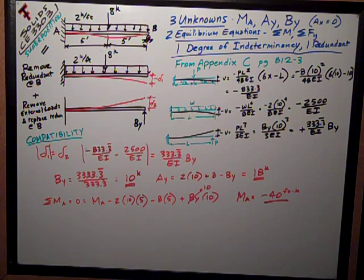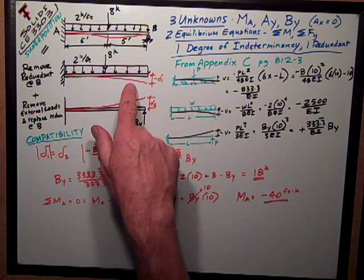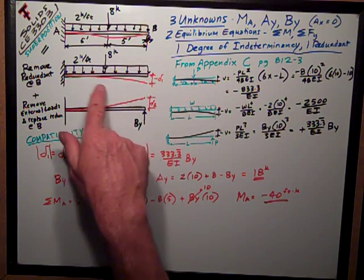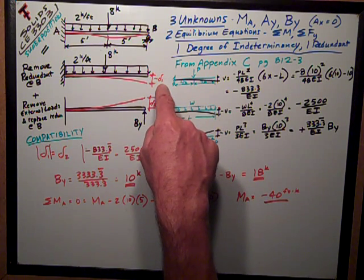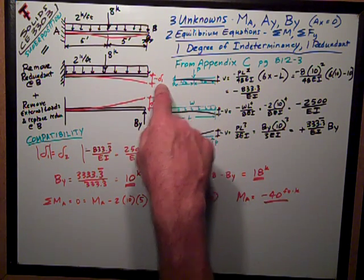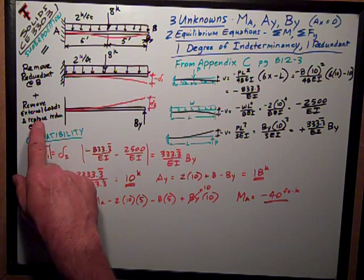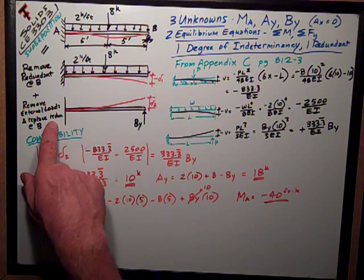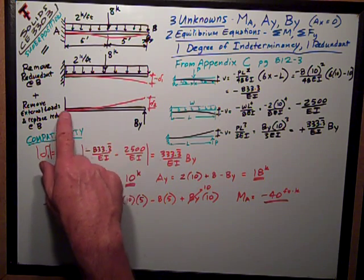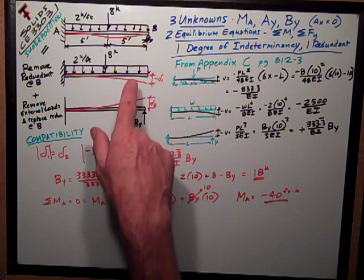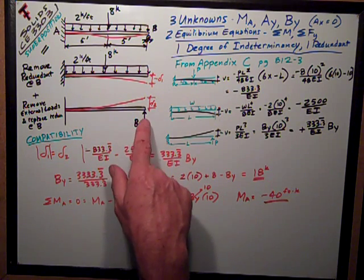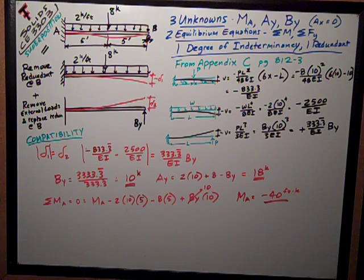And I can then have a cantilever, a simple cantilever, with these loads on it, and I can calculate the deflection at the end. Then, I can remove all the external loads and replace the redundant, put the redundant back in there. So then I'd have a cantilever with a concentrated load that is the reaction at B in the y direction, acting as a concentrated load upward on the end of the beam. Figure that deflection.